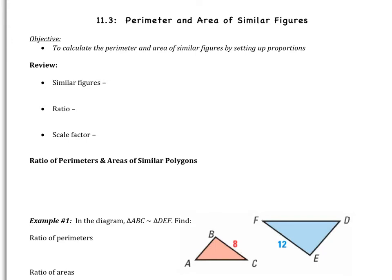Let's start by reviewing a little bit. The title of the section has similar figures in it — that's what all of Chapter 6 was about. Two figures are similar when their angles are congruent and their sides are proportional. It's kind of when you take a figure and either blow it up or shrink it down. The sides all change by the same factor, but the angles stay the same.